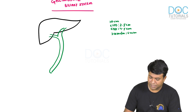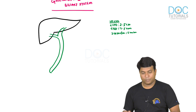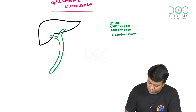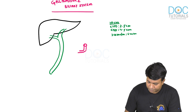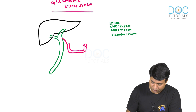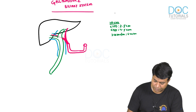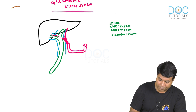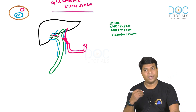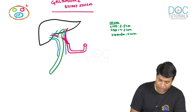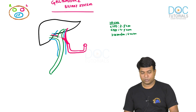Looking at this 10 cm bile duct, we can also see the other parts of this anatomy. The common hepatic artery comes up and divides into the right hepatic artery, which goes behind the bile duct, and the left hepatic artery. The portal vein is seen posterior to these structures. In the portal triad, the three structures are: portal vein seen posteriorly, artery seen to the anterior left side, and bile duct seen to the right side.